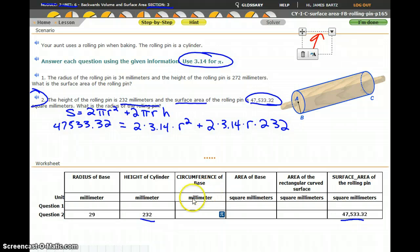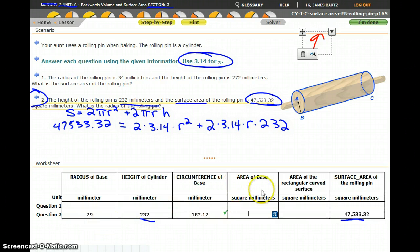And so I can then go through and figure out the rest of my table. The circumference is 2 times pi, 3.14 times the radius of 29. The area of the base, so that's going to be pi r squared, so 3.14 times our radius of 29 squared.